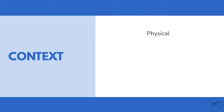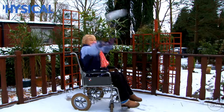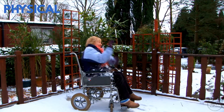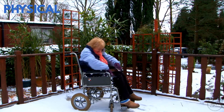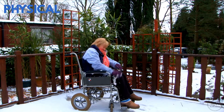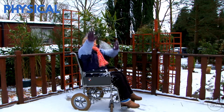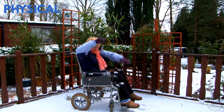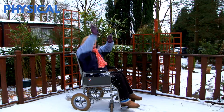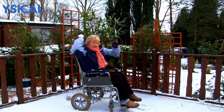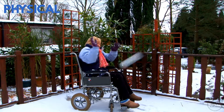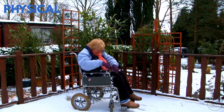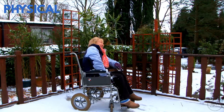According to the model, activities take place in the following contexts: physical, social, institutional, and cultural. Physical context includes every physical and technical aspect, such as weather conditions or man-made buildings that can promote or hinder participation. For example, if the road is covered in snow, a wheelchair user might not be able to move outside. Or, if there is a ramp in a library, the user will be able to enter it.